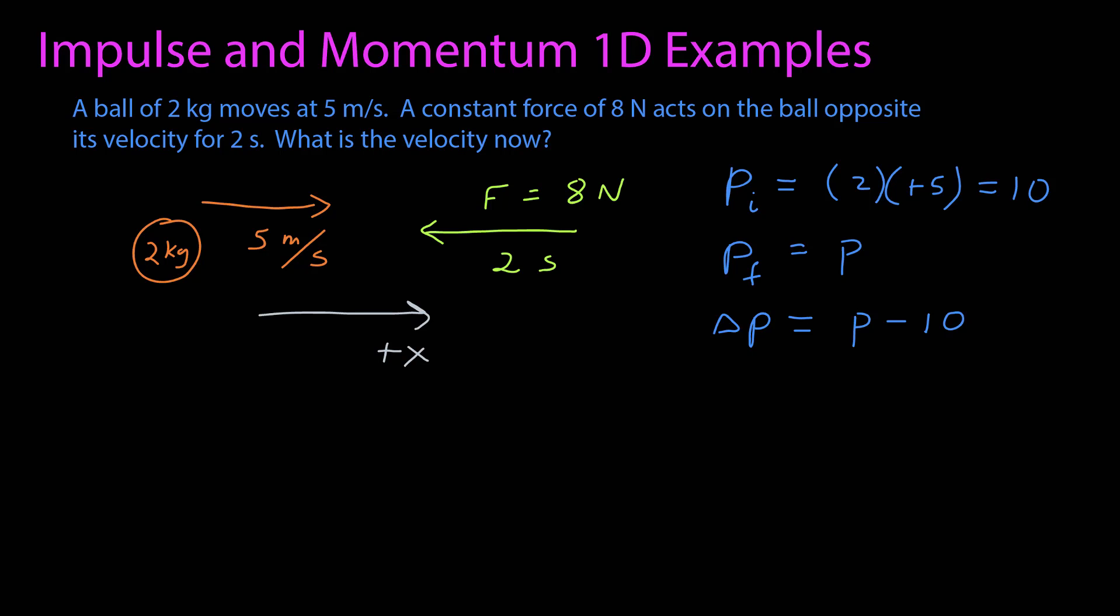Now I'm going to apply the relationships I know between impulse and momentum. I know I only have a constant force, so that relationship is the very simple difference in momentum is equal to that constant force times the time interval. Note my force is pointing in the negative x direction, and so when I put that in, it's a negative 8 newtons. Times 2 seconds is negative 16 newton seconds. That's equal to my change in momentum, and the rest is just arithmetic.